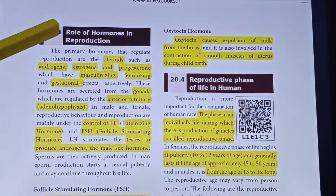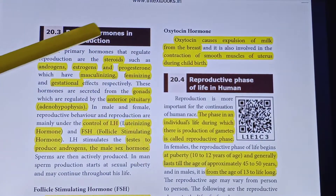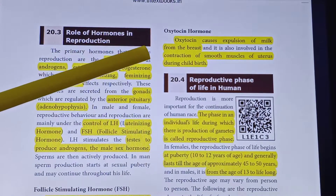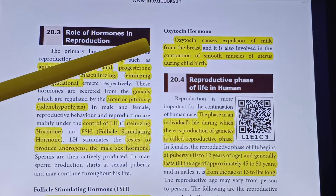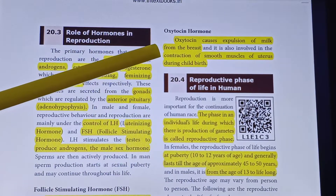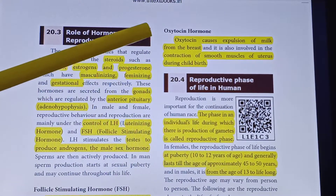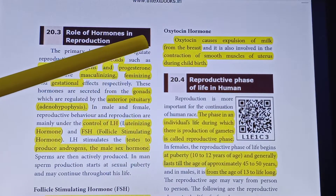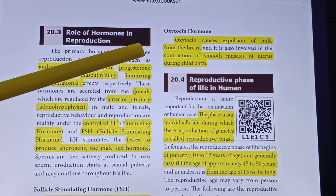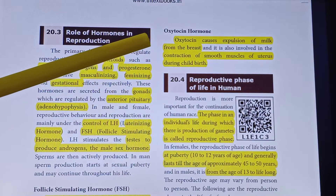Oxytocin hormone causes expression of milk from the breast. Once prolactin produces milk, oxytocin helps with milk expression.